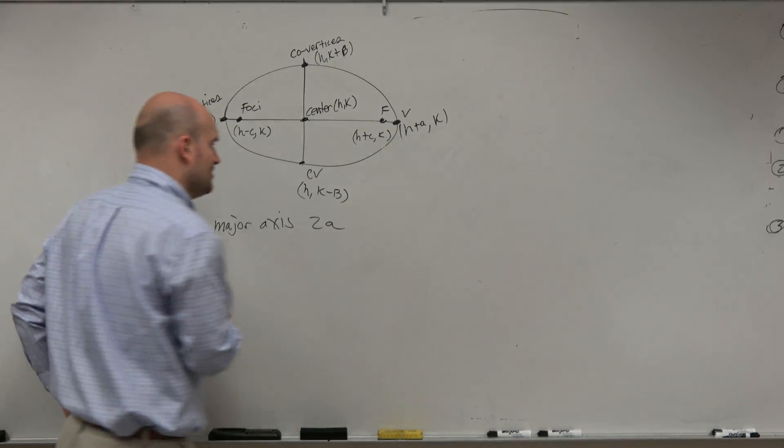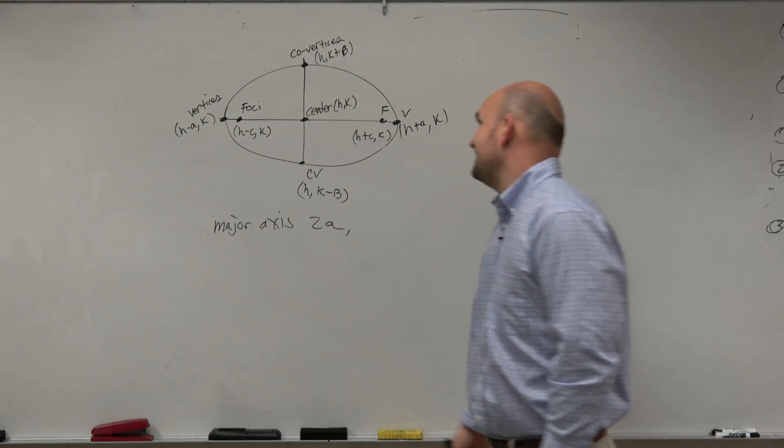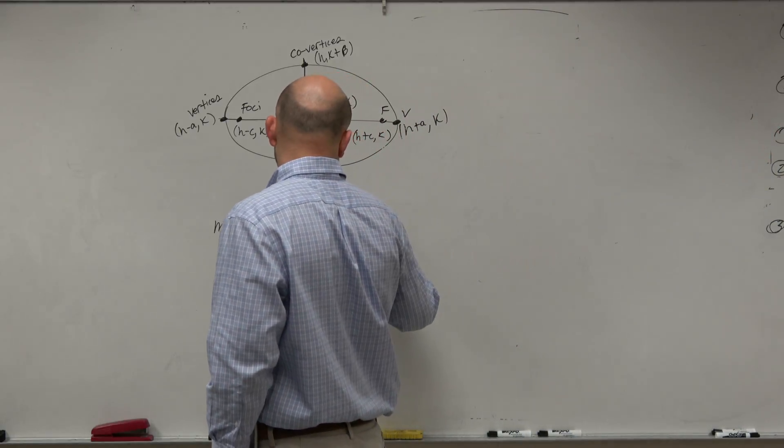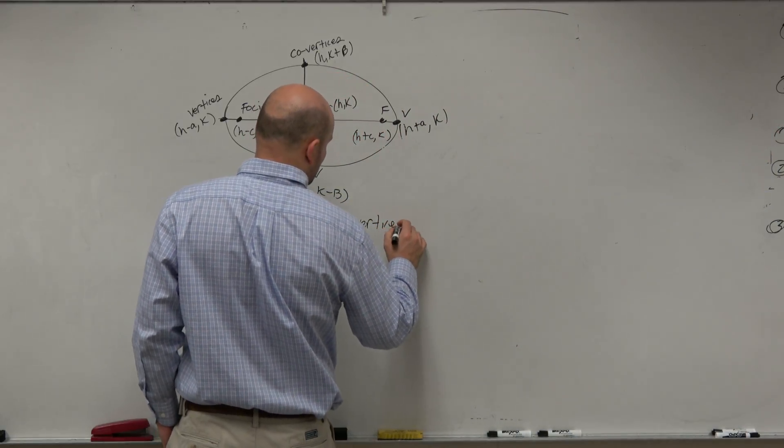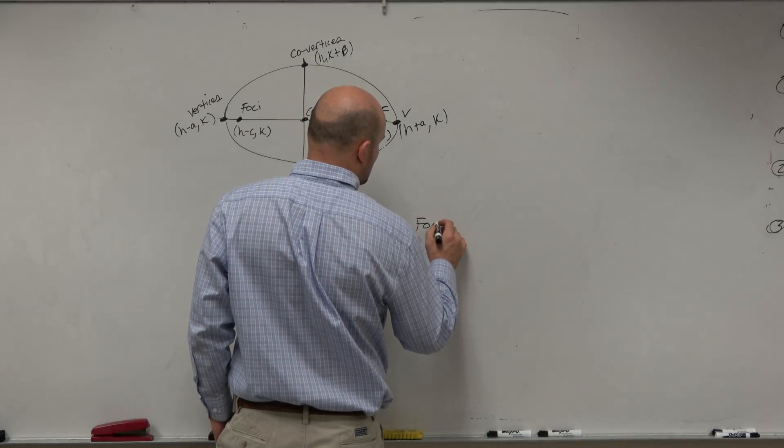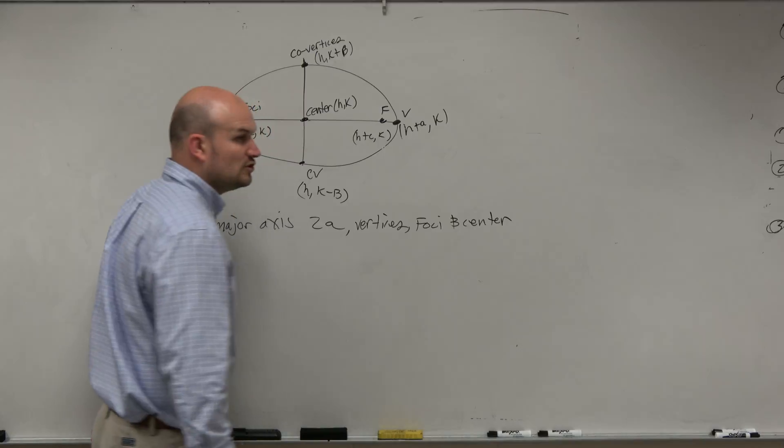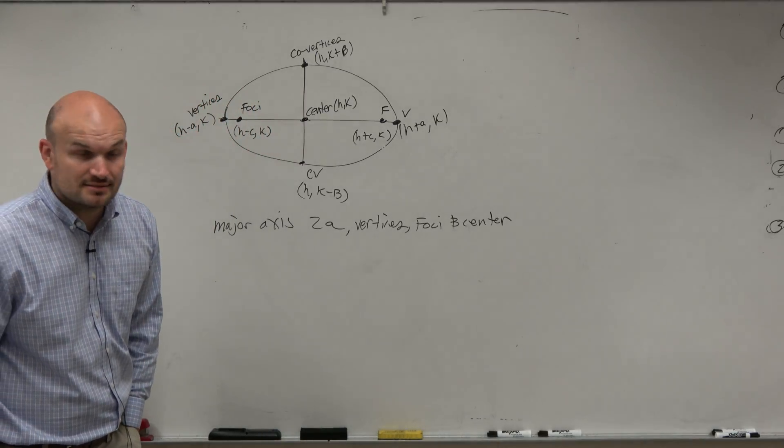Also, what's kind of important about the major axis? Let's see, the vertices, foci, and center all lie there, right? So we can say the vertices, foci, and center, those all lie on the major axis, correct?